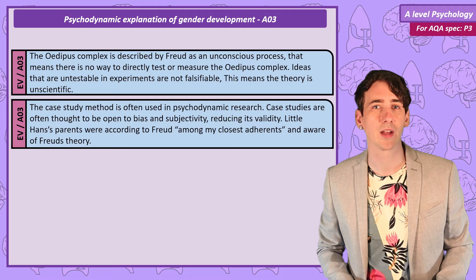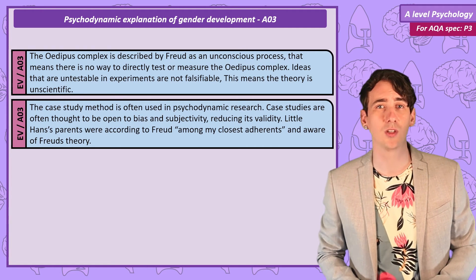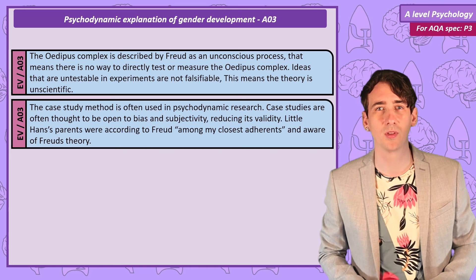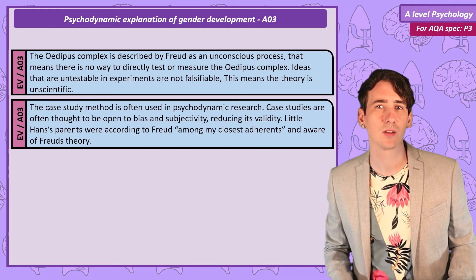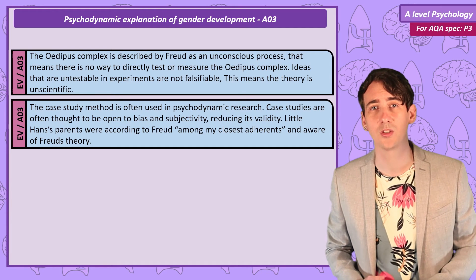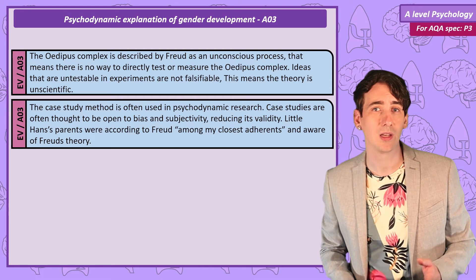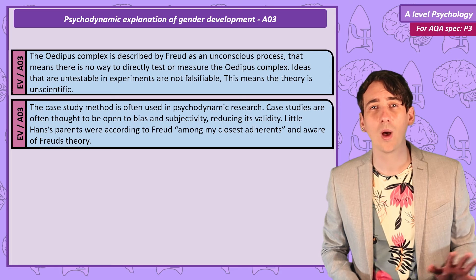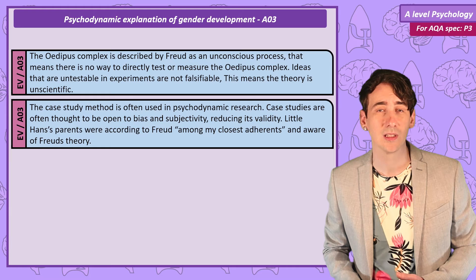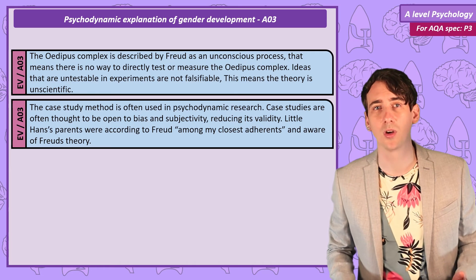A massive problem with the evidence from much of psychodynamic work, including the Little Hans study, is that it's based on case study research. This method is open to bias both from the researcher who can read too much into their observations, and the subjects who may want to give the researcher evidence. Also they are often just examples of one individual, so unlikely to be generalisable. The book Freud writes about Little Hans is a great example — the father was well aware of Freud's theories, and the way he questioned Hans to gather content for Freud was a little weird, almost designed to get answers Freud could interpret however he wanted.